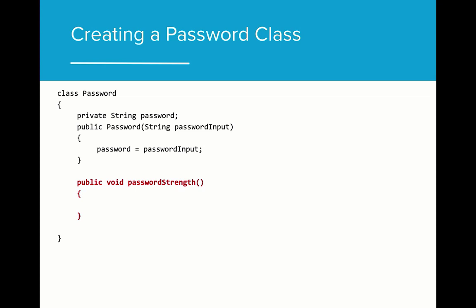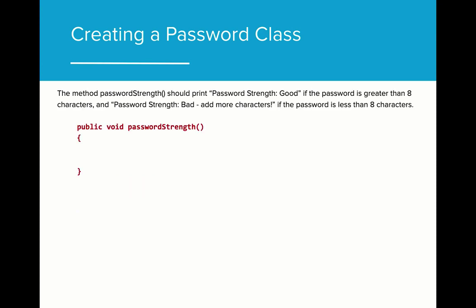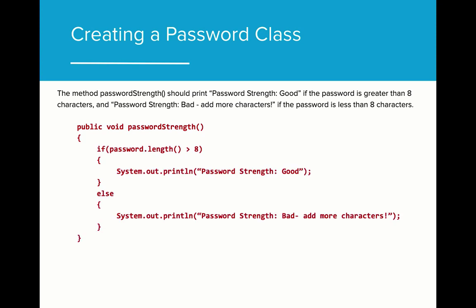In order to make this program more useful, let's add a method that tests the strength of the user's password. Let's call that method password strength. The implementation of password strength is as follows: if the password is greater than 8 characters, we will print password strength good. Otherwise, we will print password strength bad. Can you implement this based on what we've learned so far? Pause the video and try to solve this problem. We can implement this method by using an if-else statement. If the password length is longer than 8, then we will print that the strength is good. Otherwise, we will print that the strength is bad.